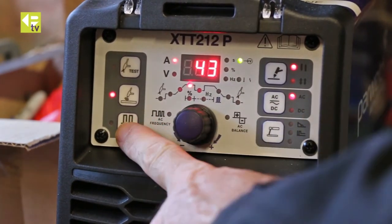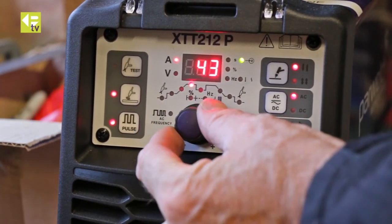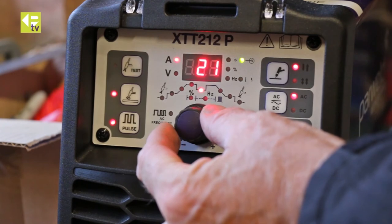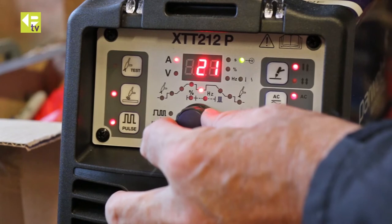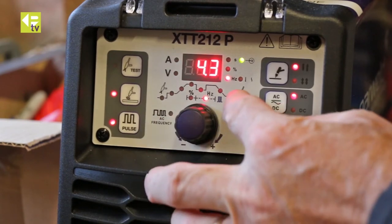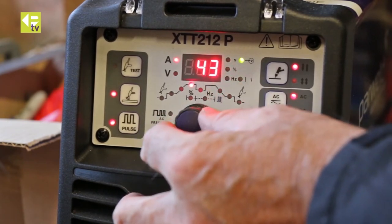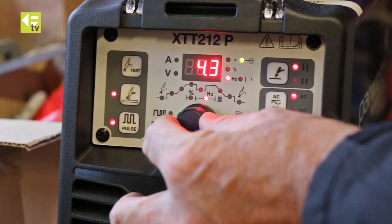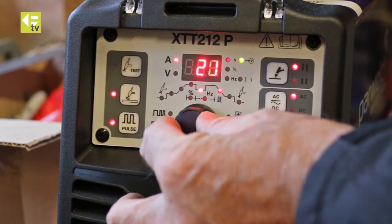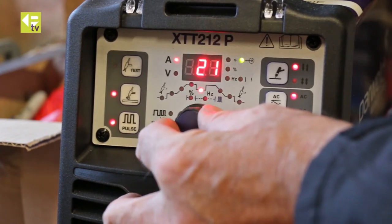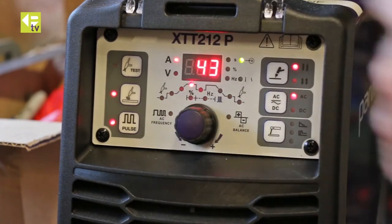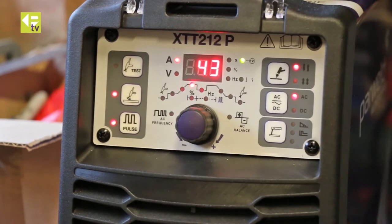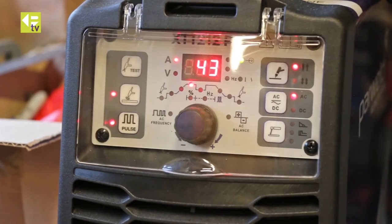We're going to switch the pulse on now. I've got a background current of 21 amps, main current between, pulse frequency of 4.3 Hertz. And 32 percent of the time it's going to be at the peak current, so most of the time it'll be sat in a cooler position.